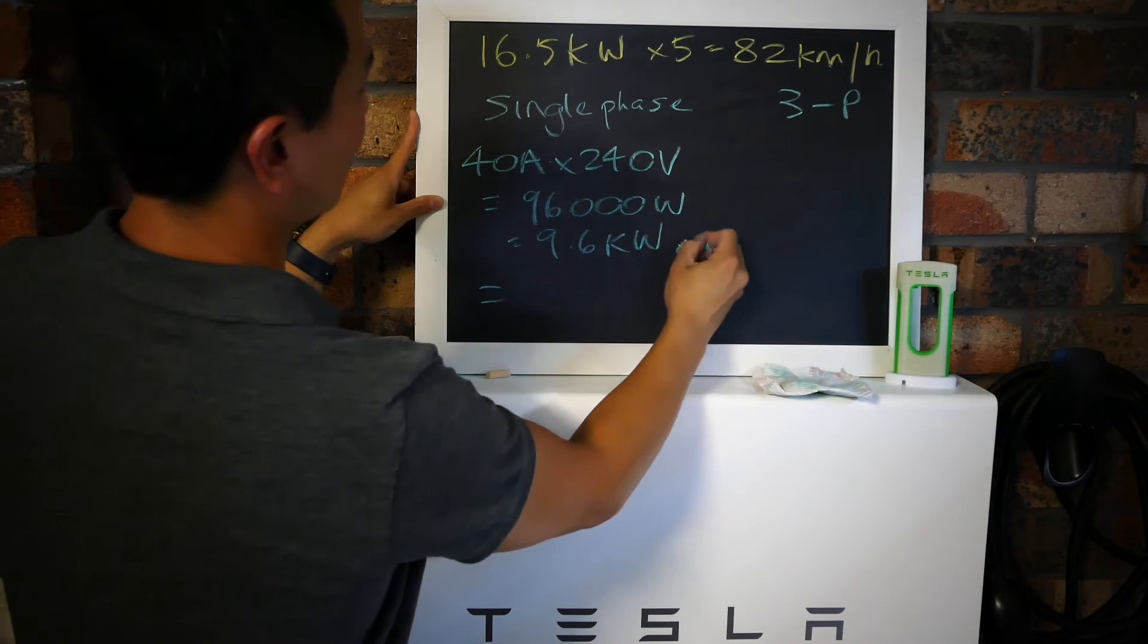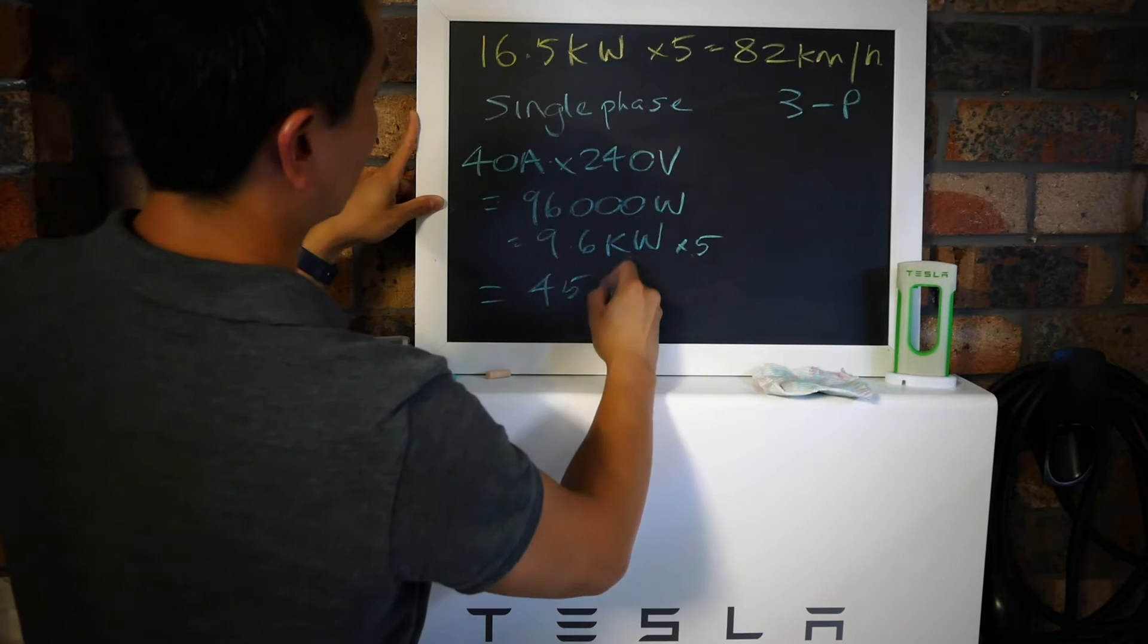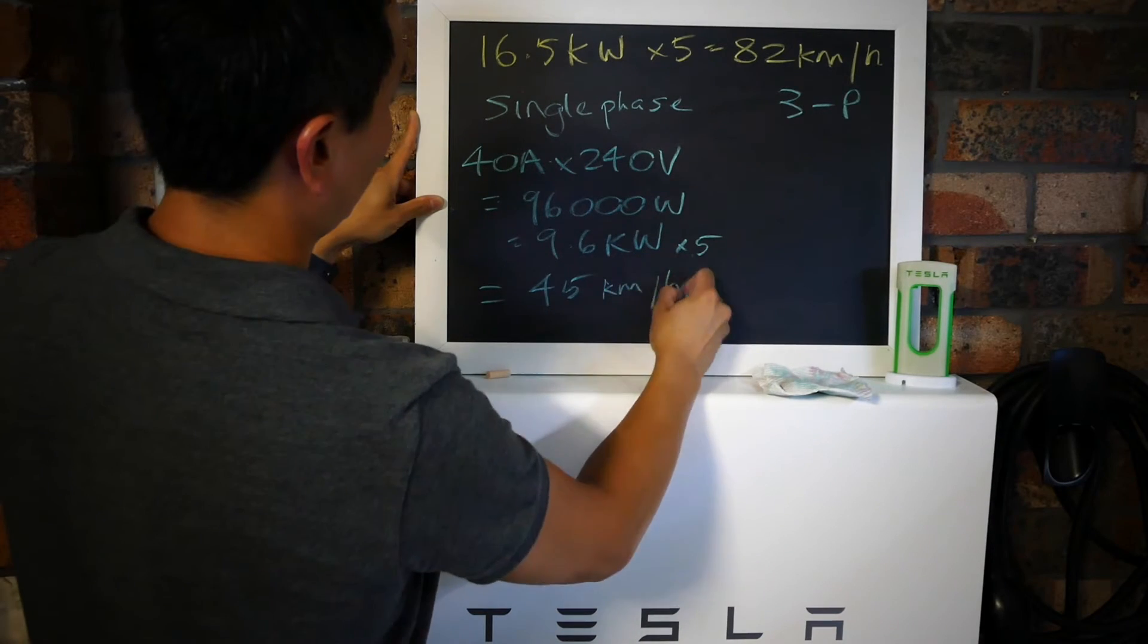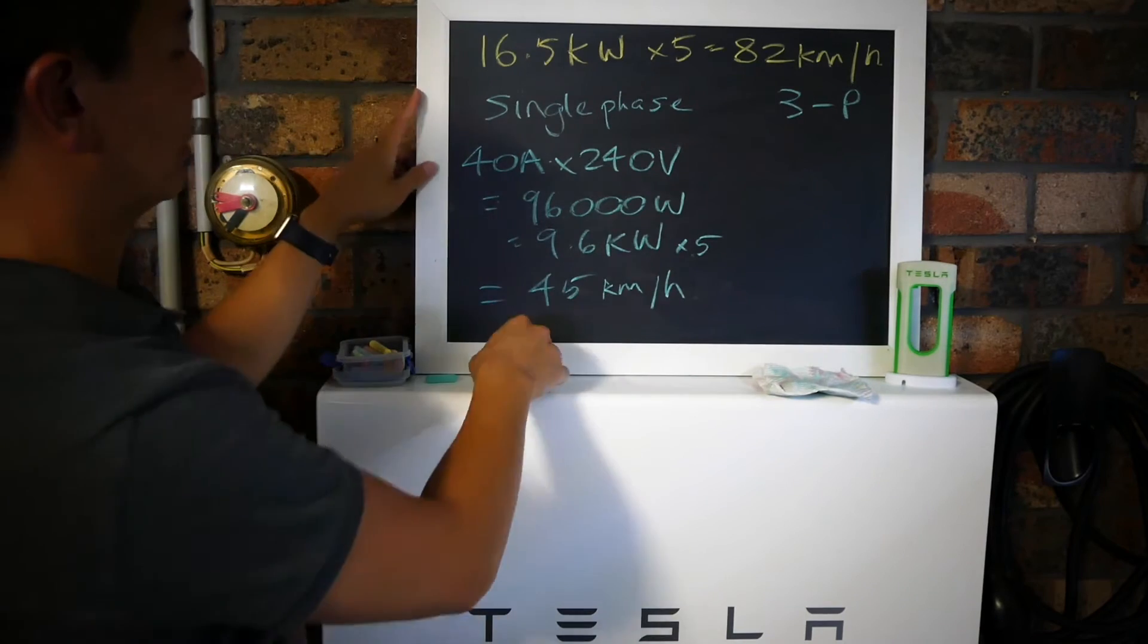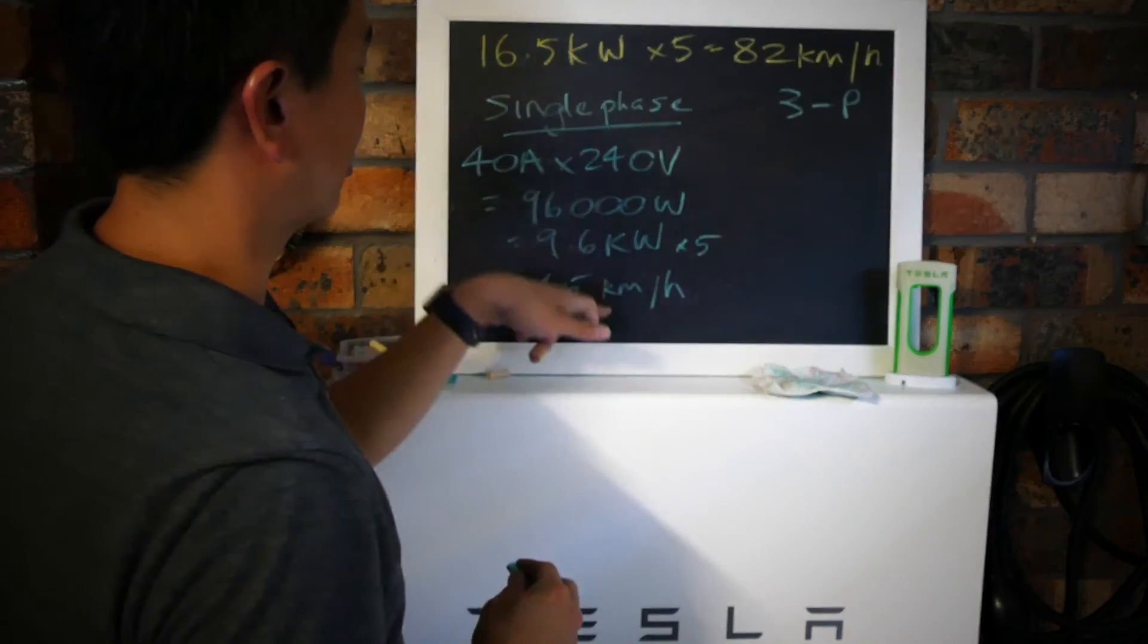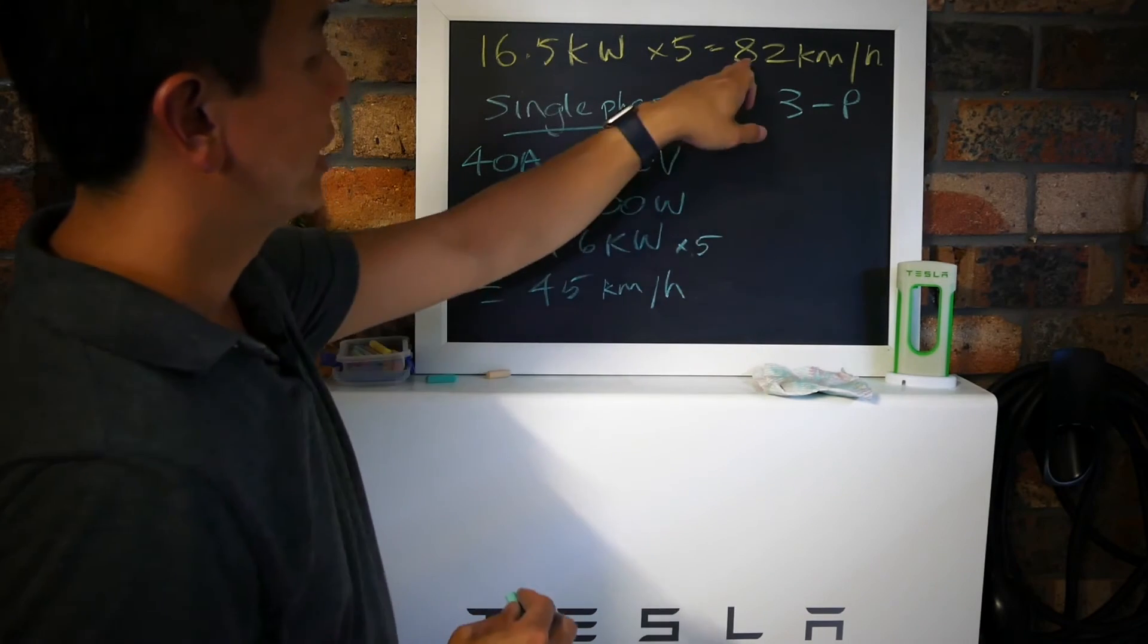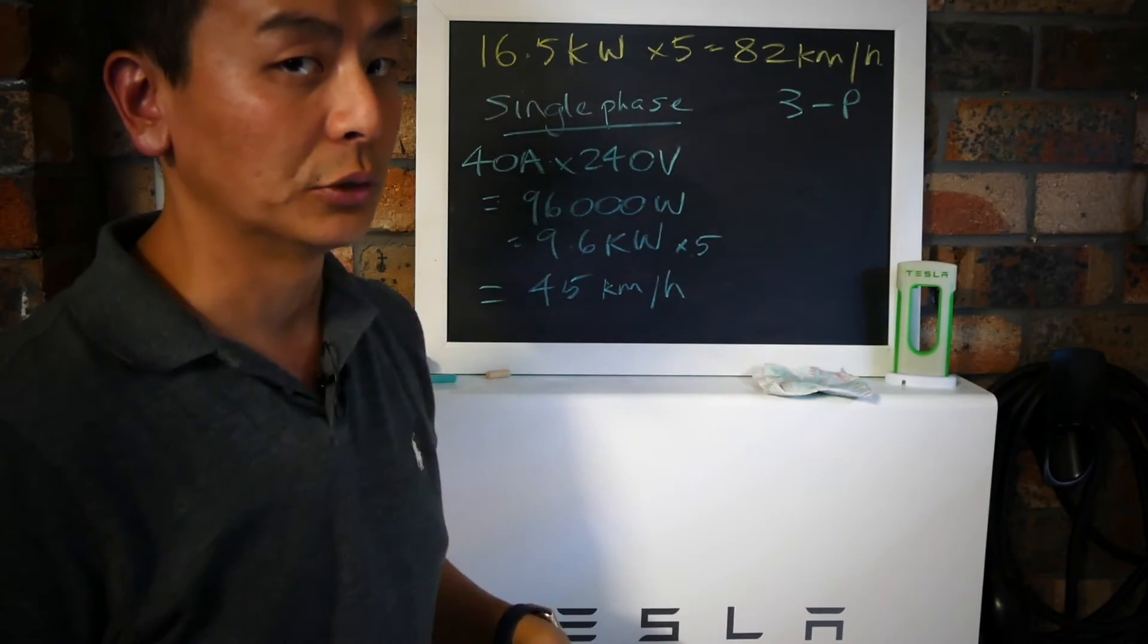Multiply that out: it's 9,600 watts or 9.6 kilowatts, which equates to 45 kilometers an hour. That's about as fast as you can charge if you have a single phase charger, even if your home is three phase. As you can see, it's a bit short of the maximum 82 kilometers an hour this car can charge.